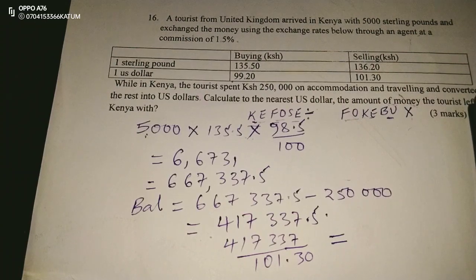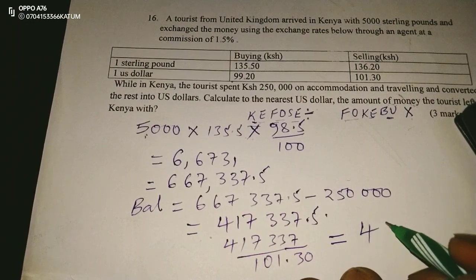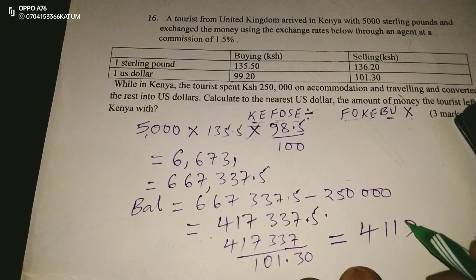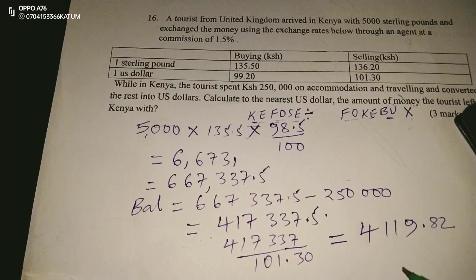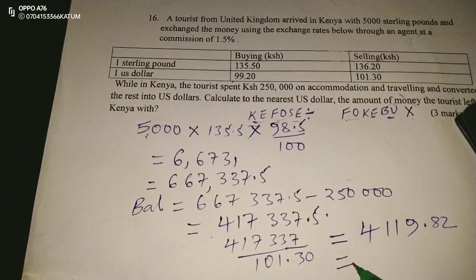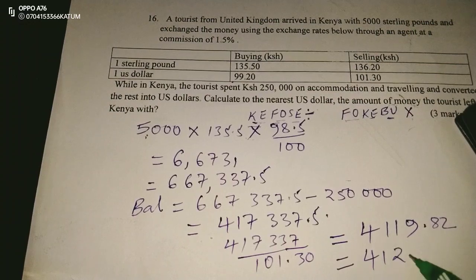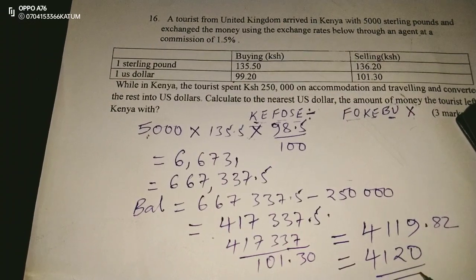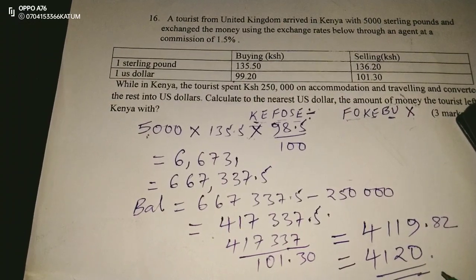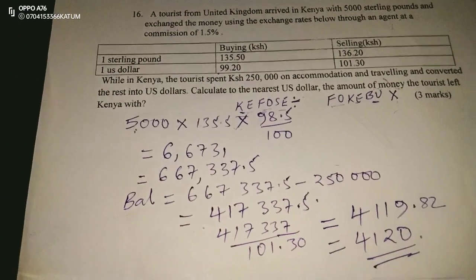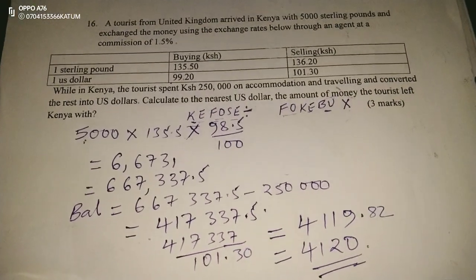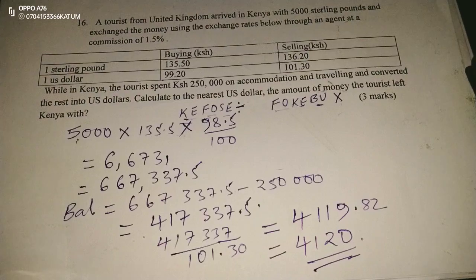Dividing by 101.30 gives us 4,119.82. Rounding to the nearest US dollar, the tourist left Kenya with approximately 4,120 US dollars. That is the amount he left Kenya with. Thank you for following — please subscribe and share.